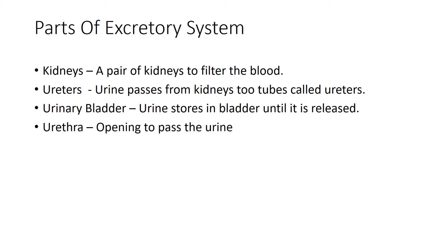The urinary bladder is a muscular organ where urine is stored. The urine collected from the ureters is stored in the urinary bladder. When the bladder is full, we release the urine. Urine passes out through an opening called the urethra.